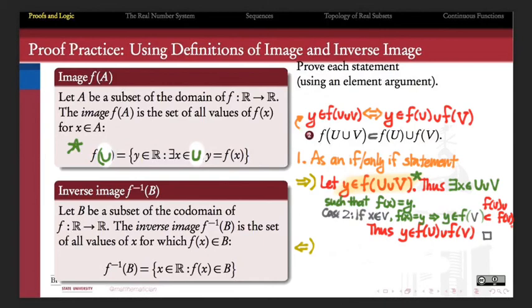And so we've proven that F of U, union V, is a subset of F of U, union F of V. The only thing left to do for the group that's doing this proof is to do the opposite implication, to prove that if Y belongs to the union of the Fs, then Y belongs to F of the union.